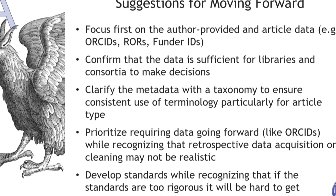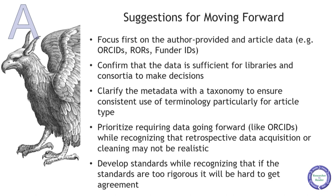We had many suggestions, and I've highlighted some of the major ones. There was a sense that it was important to focus first on author-provided and article data — things like ORCIDs, RORs, and funder IDs — that were critical for institutions considering joining these agreements to identify their authors. There was a desire to confirm that the data was sufficient for libraries and consortia to make these decisions.